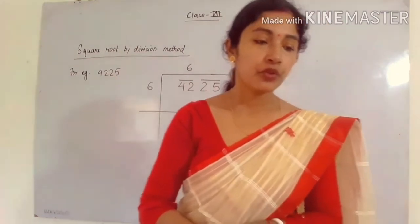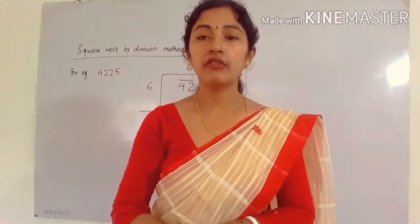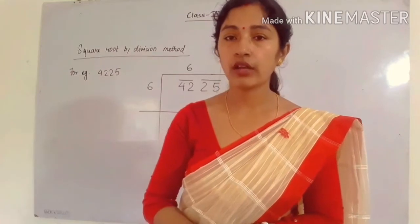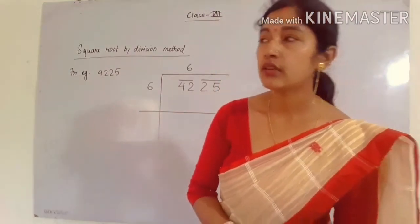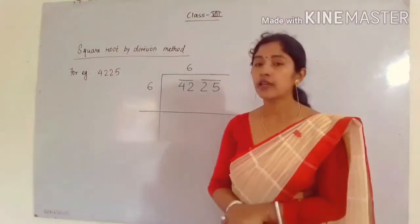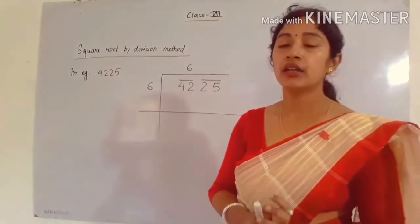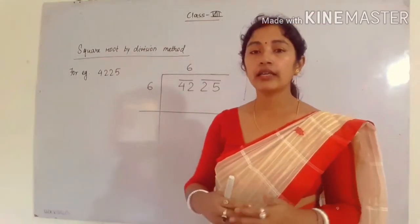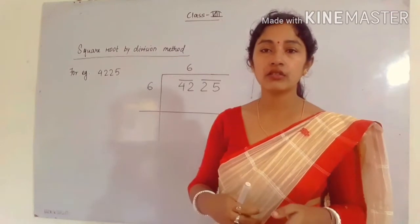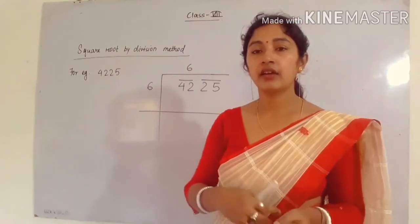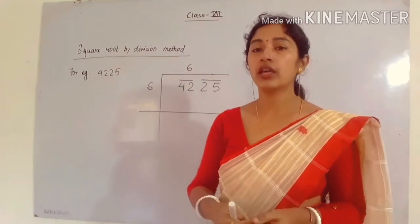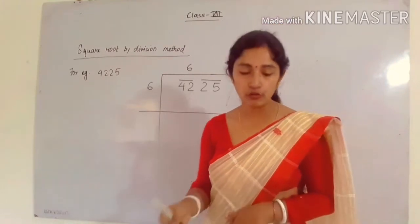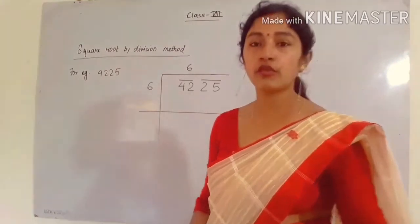You have to find the square root by division method. Already I have discussed about the square root, so what is the division method? You have to divide, but there is a rule for division. In simple divisions we divide randomly — we divide by any number. But here there are some rules. You have to follow the rules and you have to follow the steps.